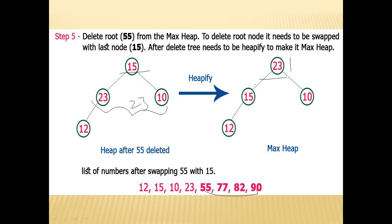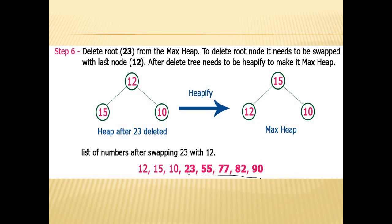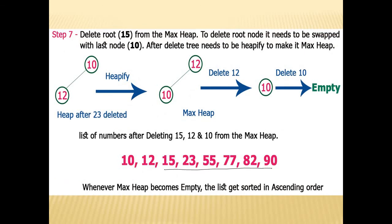Continuing the process: replace root 23 with 12, and 23 goes to its sorted position. Now 12, 15, 10 — not following heap property. Max element is 15, so replace. Then remove 15 and replace with 10. Now 10 and 12 remain. Heapify: 12 is max, so 12 comes up. Delete 12 and it goes to sorted position, leaving 10 as the last element.